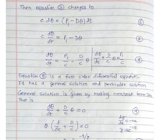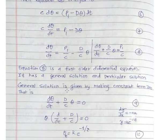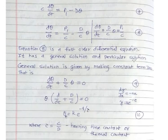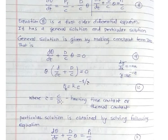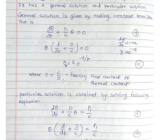For this equation we will find the general solution and the particular solution. The general solution is also called the transient solution and the particular solution is also called the steady state solution. The general solution is obtained by setting the constant term P1 upon C to zero, giving D theta upon DT plus D upon C into theta equals 0. This has the standard form DY/DX equals minus AX, so the solution is theta T equals K·e raised to minus T upon tau, where theta T is the transient temperature. Tau is the heating time constant, given by tau equals C upon D.